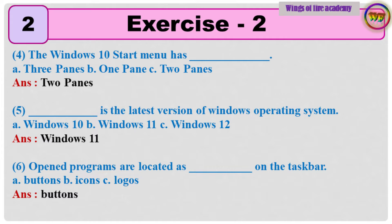Question 5: Dash is the latest version of Windows Operating System. A. Windows 10, B. Windows 11, C. Windows 12. Answer: Windows 11. Question 6: Open programs are located as dash on the taskbar. A. Buttons, B. Icons, C. Logos. Answer: Buttons.